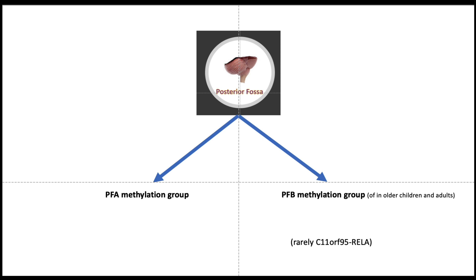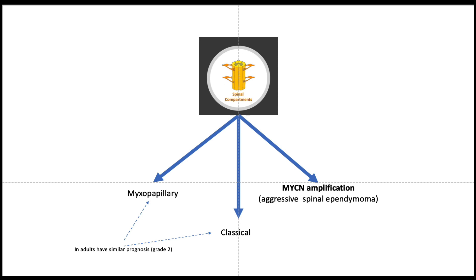Looking at spinal ependymomas, the important molecular abnormality is MYEC amplification. This is rare but is associated with aggressive disseminated spinal ependymomas. Regarding myxopapillary ependymomas, they have a prognosis similar to classical ependymomas, and in this classification it has been suggested that myxopapillary ependymomas should be treated as grade 2 ependymomas rather than grade 1 as was the case in the previous classification.